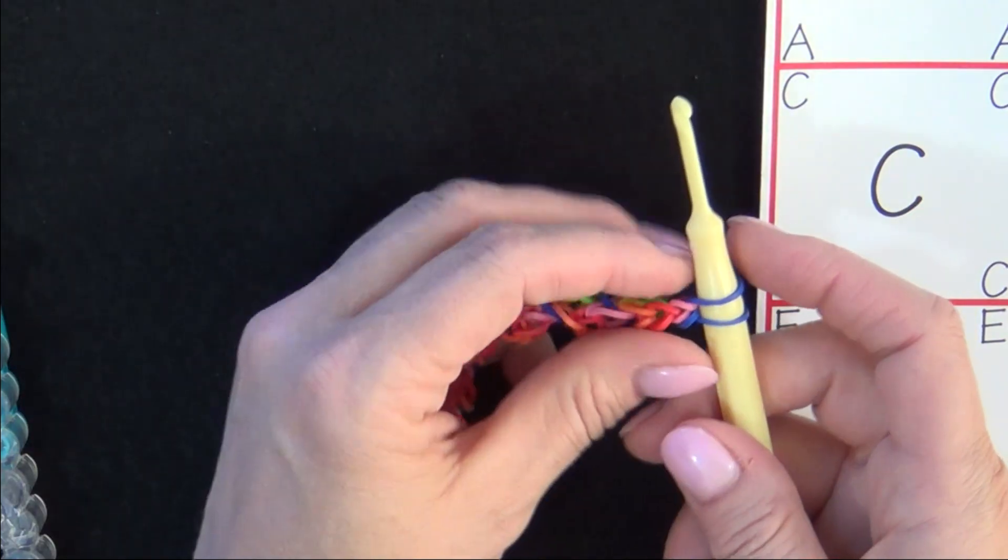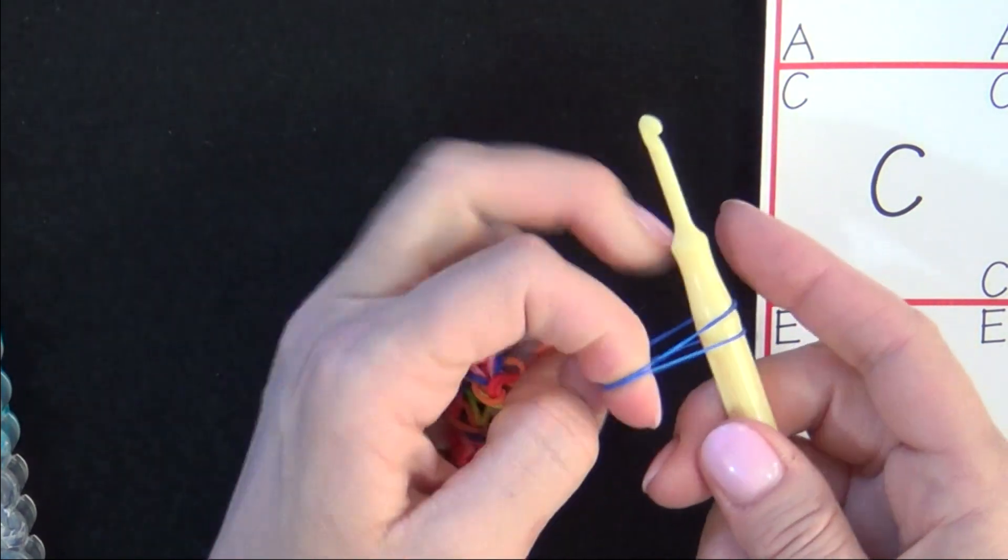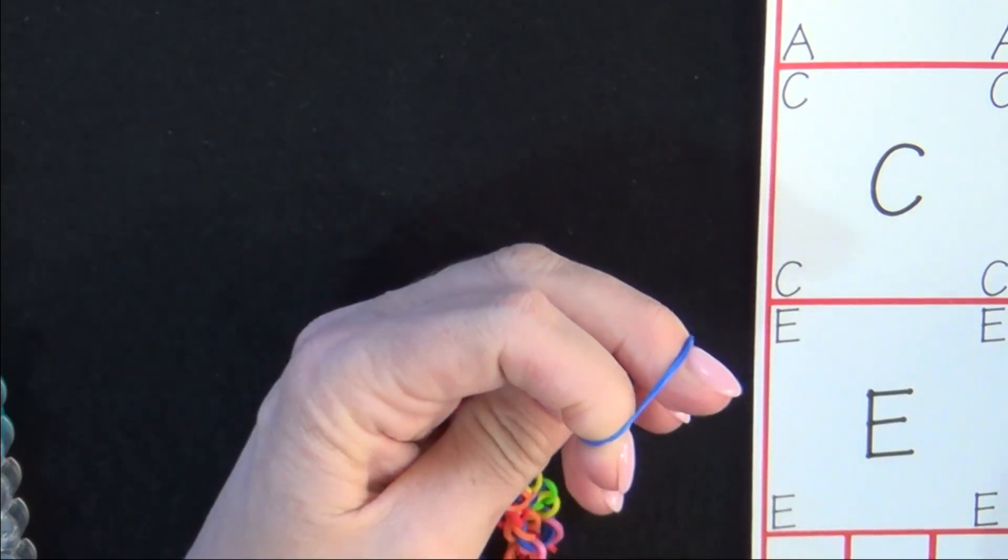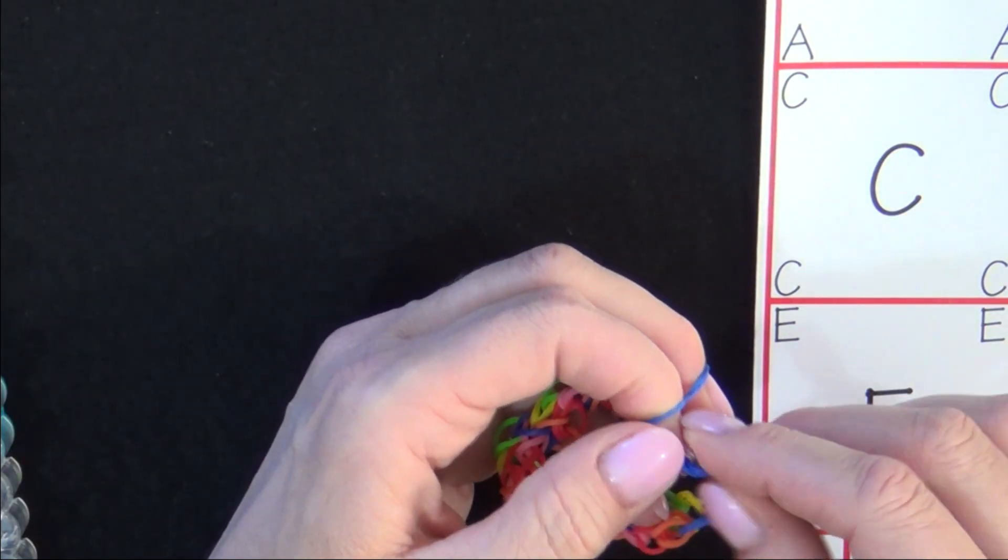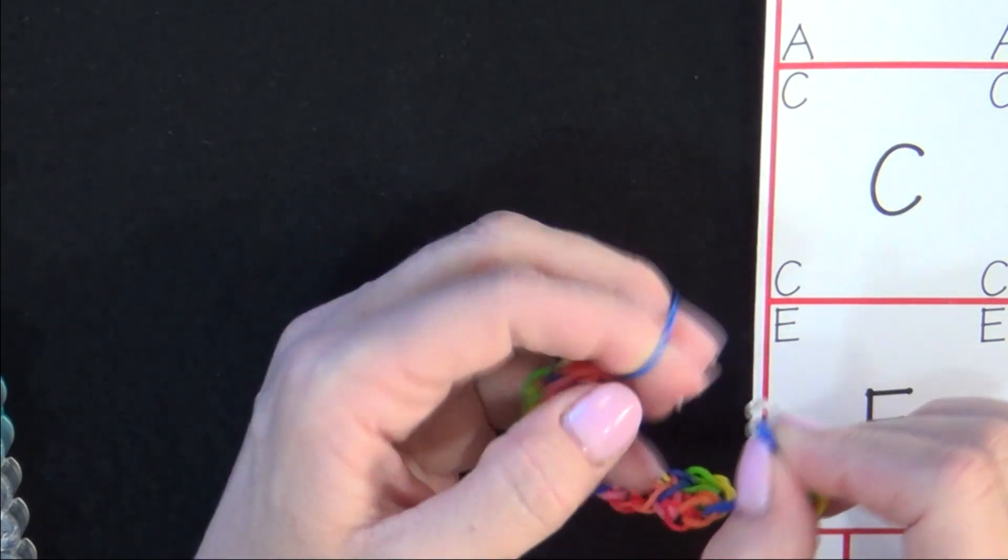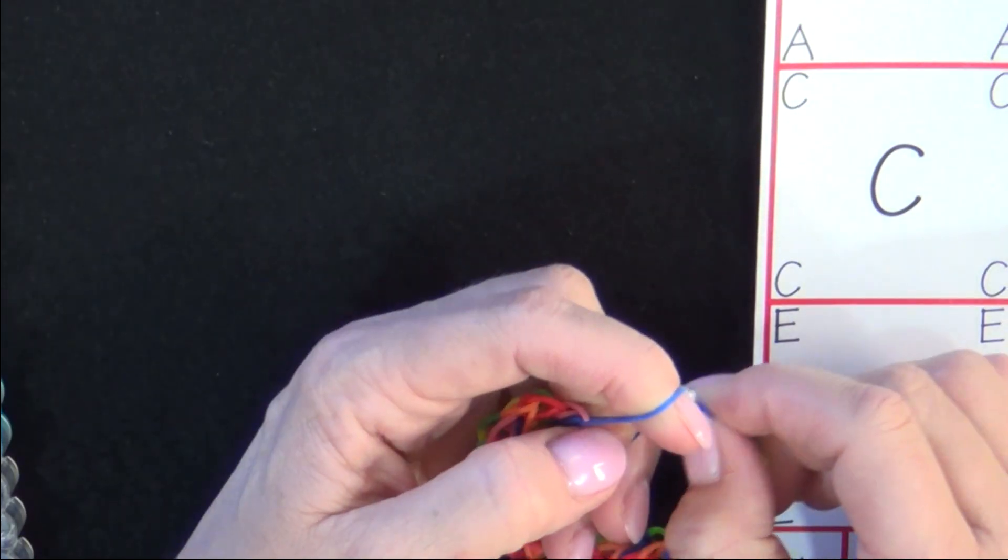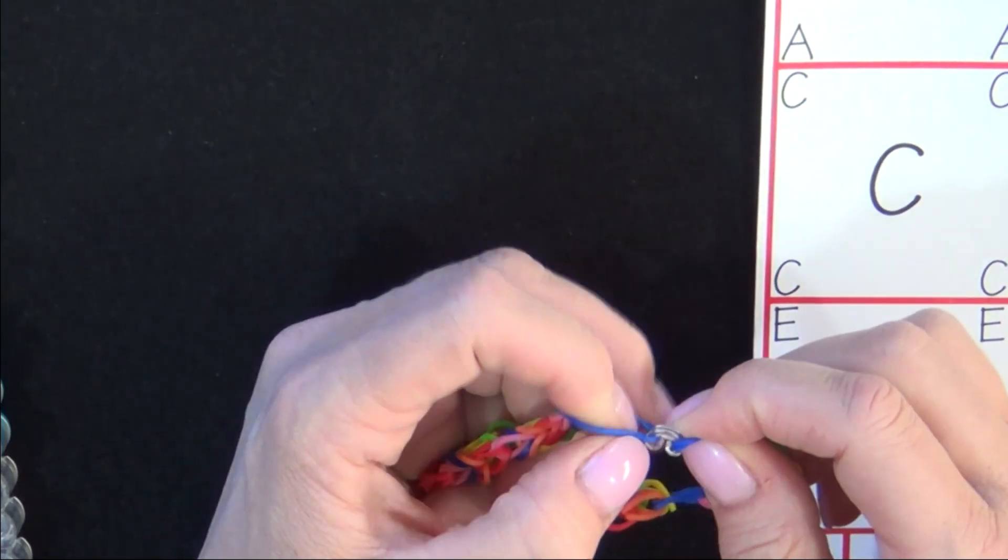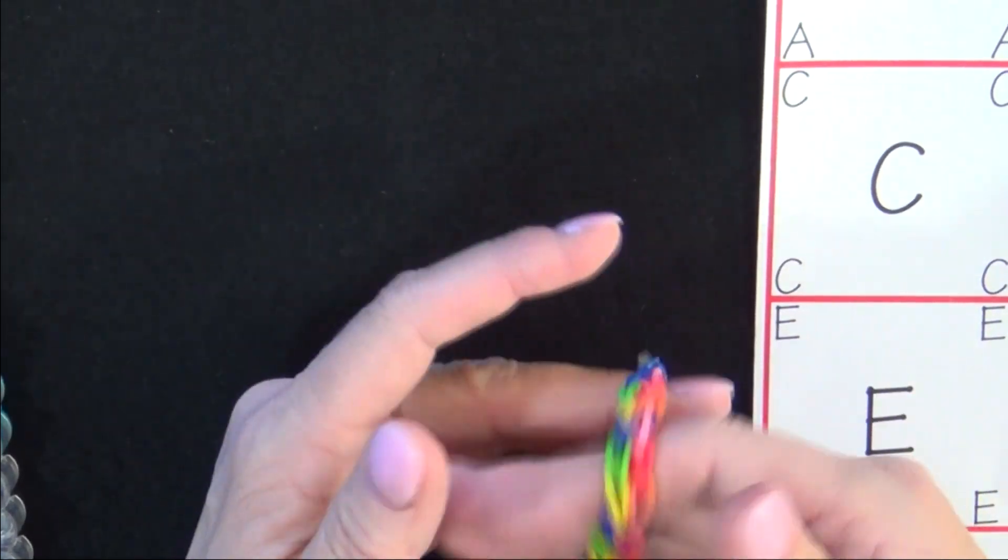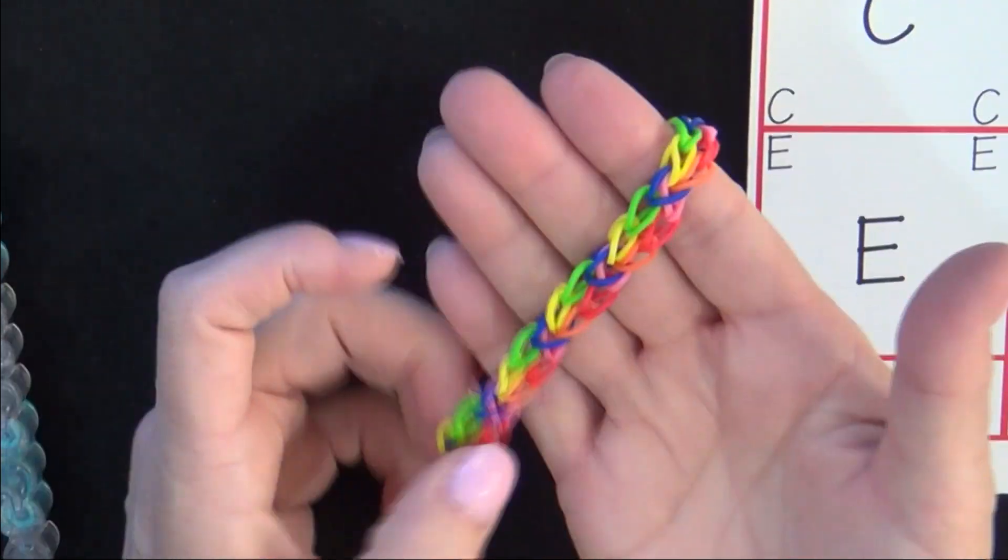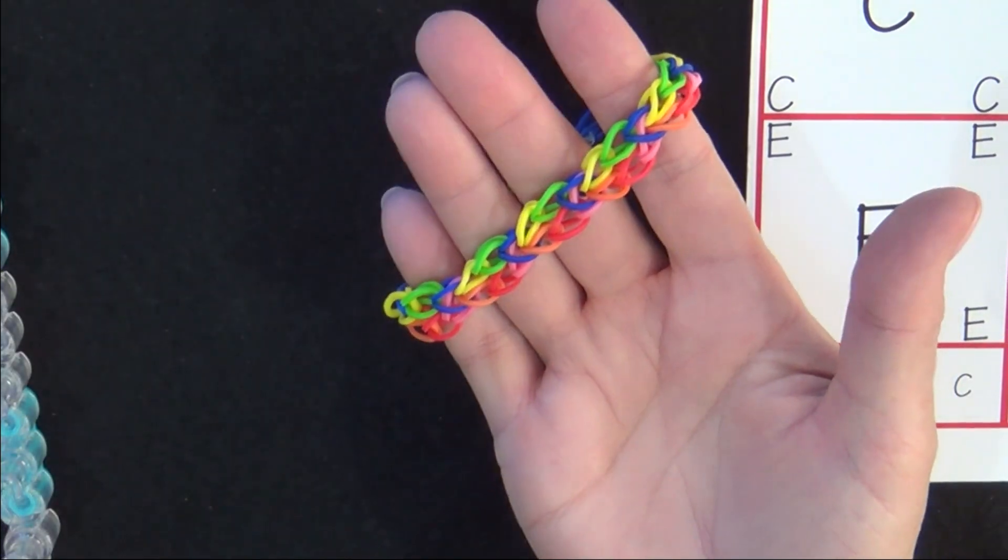You'll grab your hook, pull it away, put your two fingers in there. This creates another area for you where you can attach the other side of your C-clip. You pull the bands to one side, pull your C-clip over that one and secure that. And then there you have your finished honeycomb bracelet.